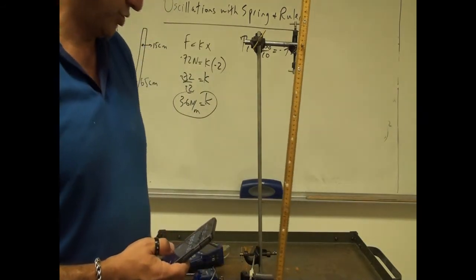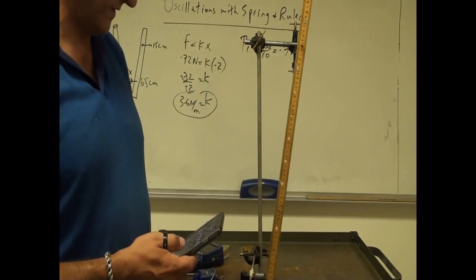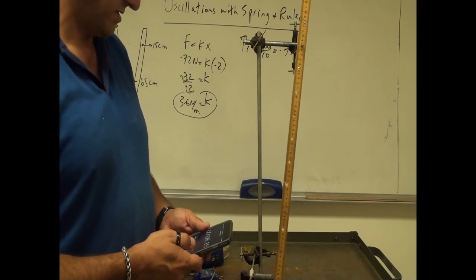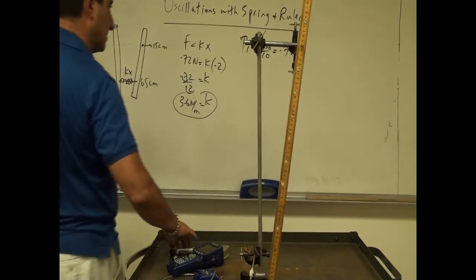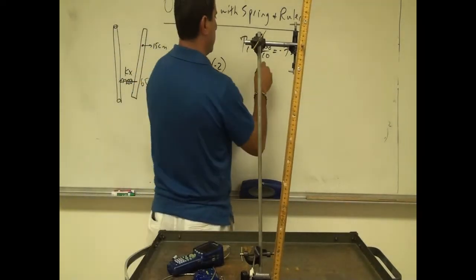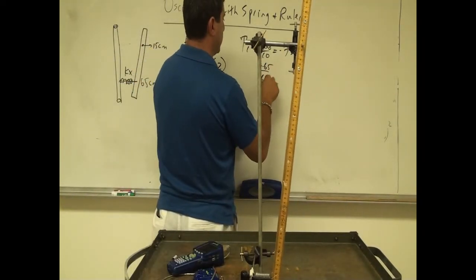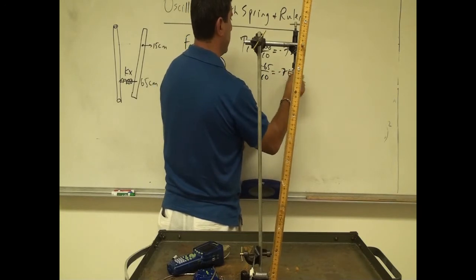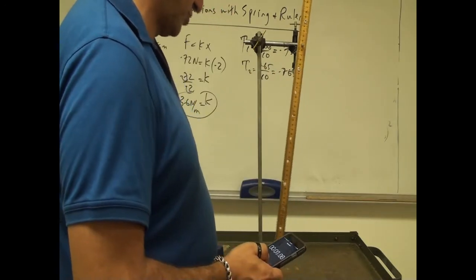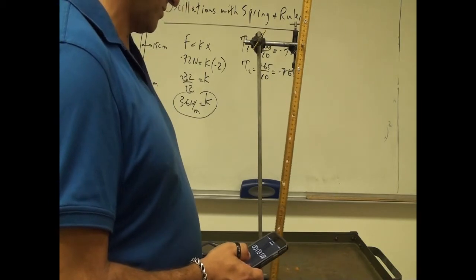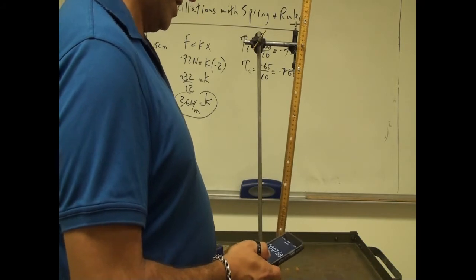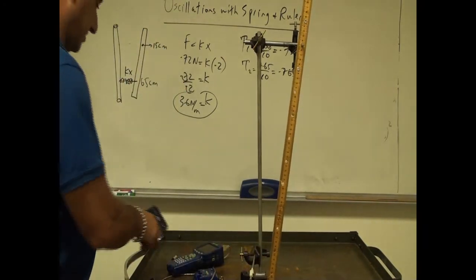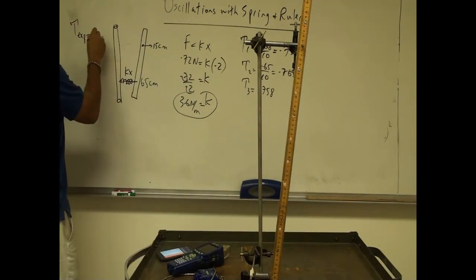Second trial: 10 oscillations in 7.65 seconds, giving 0.765 seconds per oscillation. Third trial: 7.58 seconds for 10 oscillations. Averaging the three trials gives approximately 7.54 seconds total, so the experimental period is about 0.754 seconds.